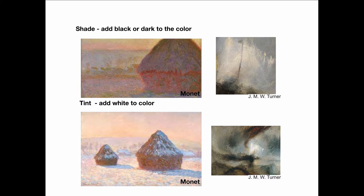And on the right, we have JMW Turner, who added shades to his painting. He created variations on the darks and added black to his color. In his sky area, he added white — so he tinted the sky area. And in the water and the dark areas, he added shades to his color.